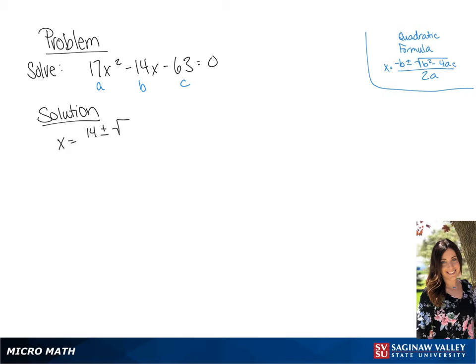We are going to get x equals 14 plus or minus the square root of 196 plus 4,284 all over 34.